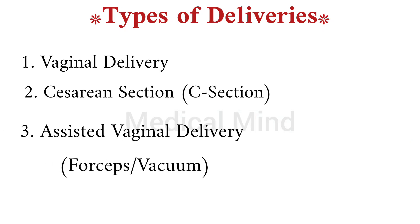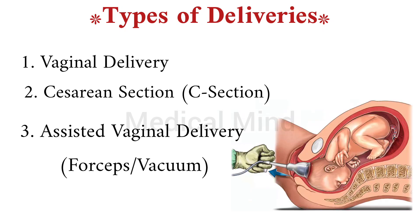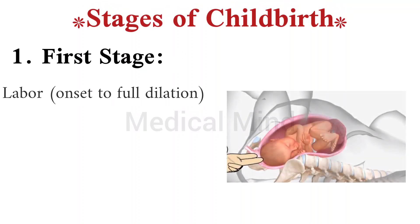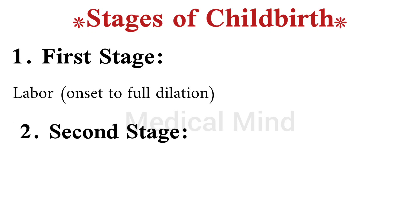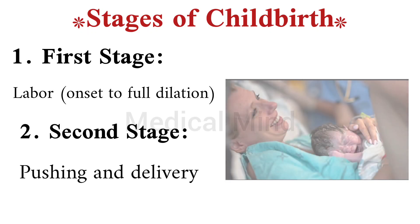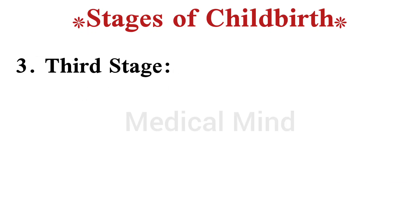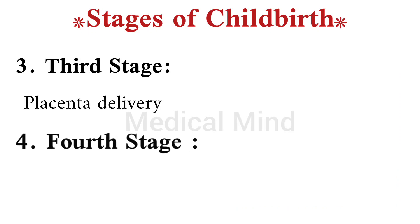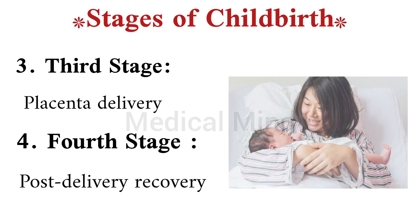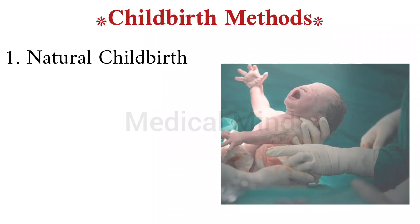Stages of childbirth: one, first stage — labor onset to full dilation. Two, second stage — pushing and delivery. Three, third stage — placenta delivery. Four, fourth stage — post-delivery recovery. Childbirth methods: one, natural childbirth. Two, water birth. Three, epidural anesthesia. Four, induced labor.